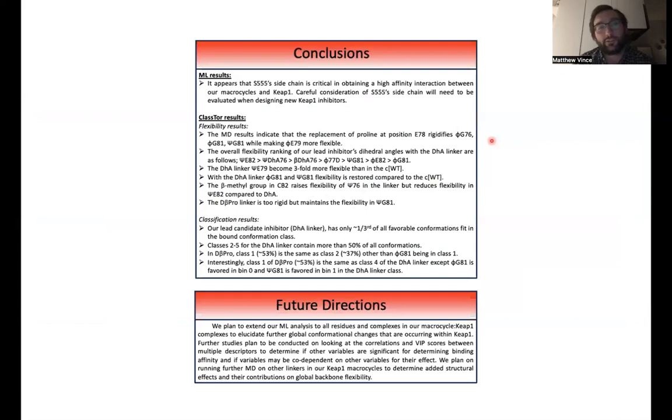So in conclusion, from the machine learning results, it appears that Serine 555 sidechain is critical in obtaining a high affinity interaction. This is something to consider for future design studies.